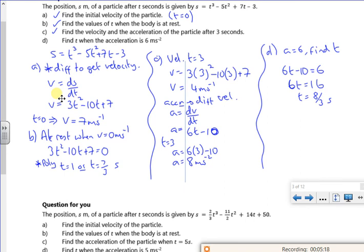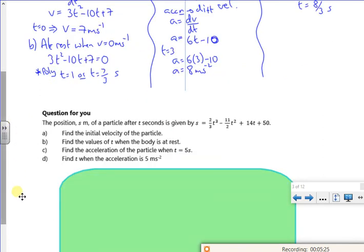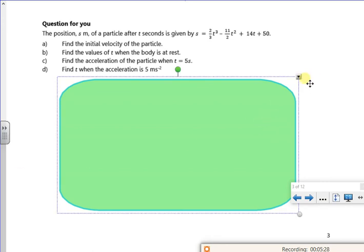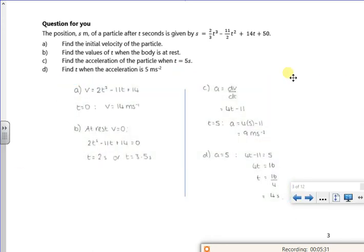Now there is a question for you. Hang on, let me scroll this down. So there's a question for you there. So I'll start off with the position, the initial velocity. So remember that my velocity is ds by dt. So differentiate. And then at rest, I've got the acceleration. So I differentiate my velocity and then sub it in. So hopefully that's okay.